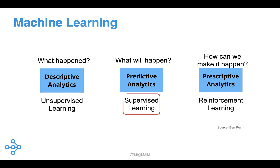The most common form of machine learning is supervised learning, a set of techniques that rely on labeled examples. Classification and regression are popular examples of supervised learning.